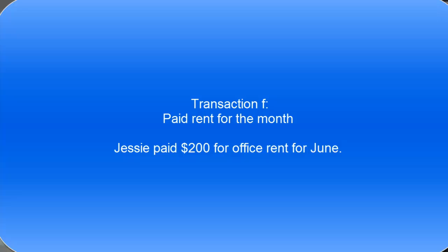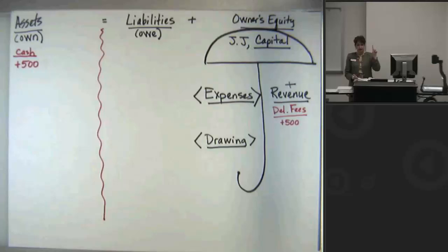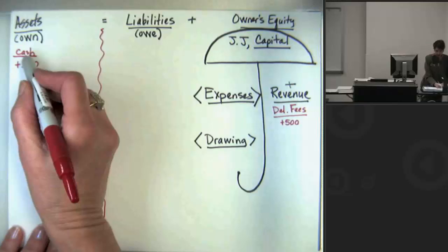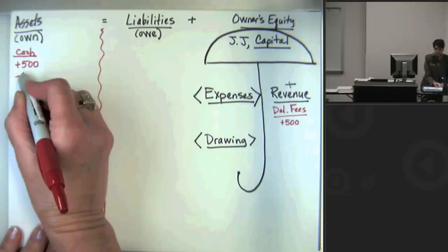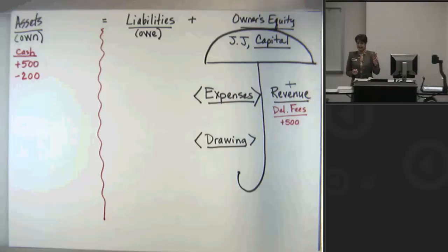Let's move to the next one. Transaction F, I pay rent for the month. Jessie is renting a small office on campus, and she's paying $200 for her rent for the month of June. What are my three questions? The first one is, what happened here is an expense for doing business, right? So now we'll ask ourselves the second question, and that's going to be, what accounts are affected here? If she wrote a check, that means cash is affected. And is cash affected up or down? Down. That's correct. She wrote a check. Anytime you write a check, cash is going down.